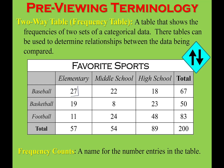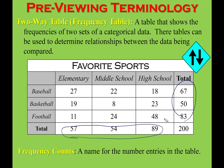There are 27 people who chose baseball as their favorite sport who are in elementary school. There are 8 middle school students who chose basketball as their favorite sport. For each row and column we also receive the total — 57 elementary students, 54 middle school, and 89 high school. There were 50 students altogether that chose basketball. Frequency tables tell me how many there are for each category.